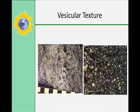Vesicular texture means that it contains tiny holes called vesicles, which are formed due to gas bubbles in the lava or magma. Vesicular rocks are very porous and may resemble a sponge. They are commonly low in density and can float on water. Pumice and scoria are examples of those.